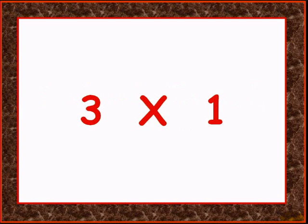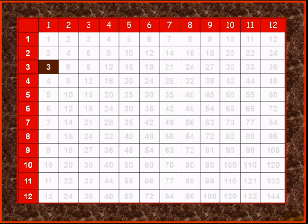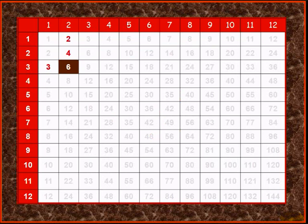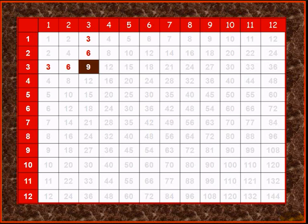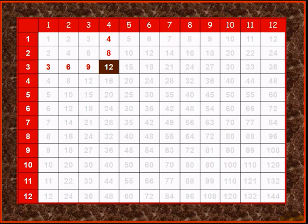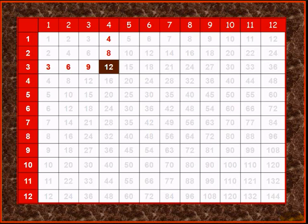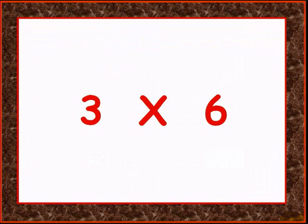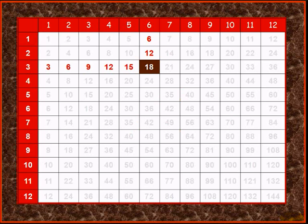Three times one is three. Adding three times two gives six. Adding three times three gives nine. Adding three times four gives twelve. Adding three times five gives fifteen. Adding three times six gives eighteen.